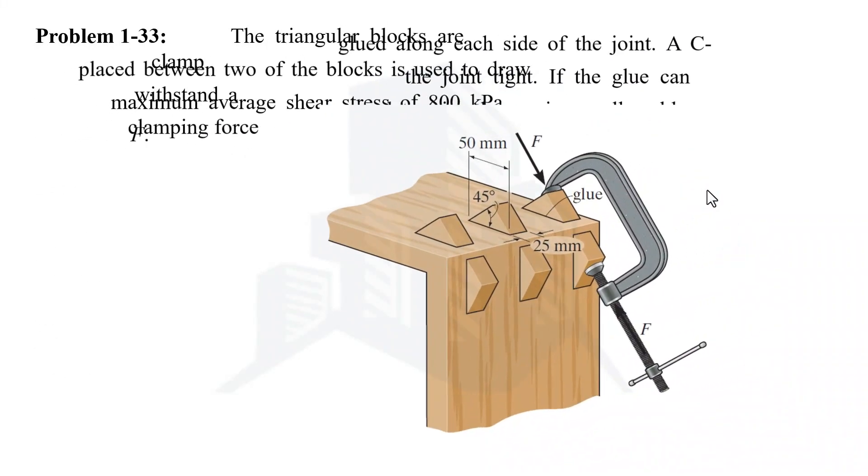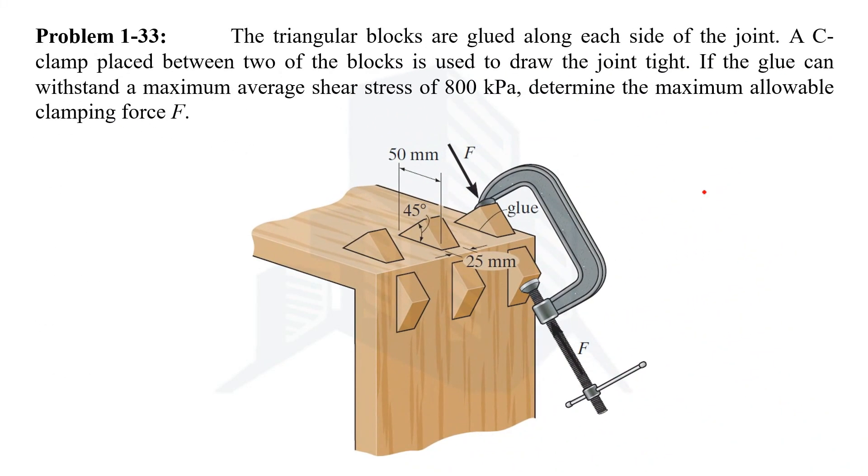So let's start our first example which is example number 1-33. In this example we are being asked to calculate the maximum allowable clamping force which is being applied with the help of this C-clamp. So this force is required. What we have been given? We have been given the average shear stress of 80 kPa that is being applied.